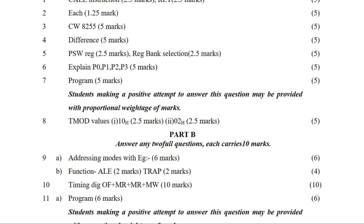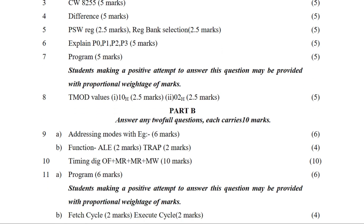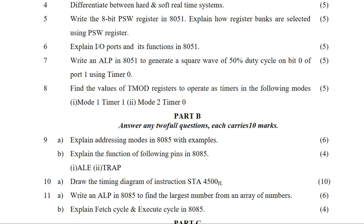The next question is to explain the operation of timers in the following modes. In the TMOD register, we can set values to configure the timer modes. The modes are: Mode 0, Mode 1, Mode 2, and Mode 3. Mode 0 is 8-bit, Mode 1 is 16-bit, and Mode 2 is auto-reload 8-bit.